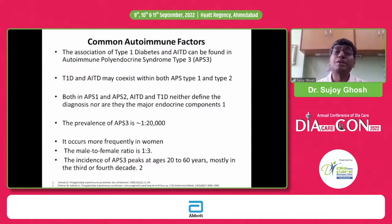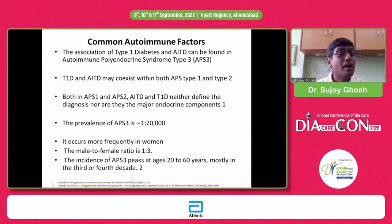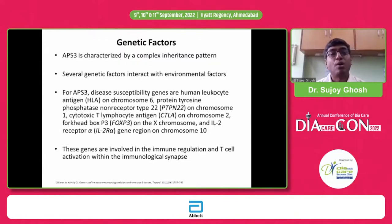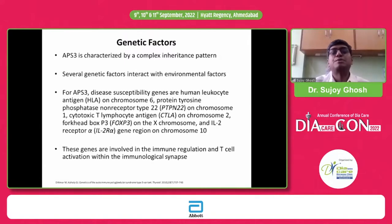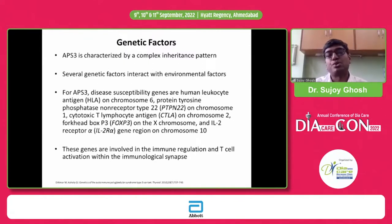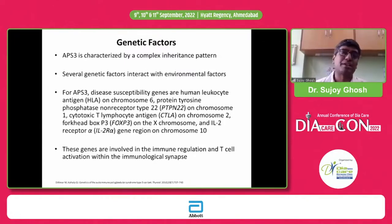Particularly in type 1, which is an autoimmune disorder, you will have other autoimmune diseases associated, including thyroid dysfunction and autoimmune polyglandular endocrine syndromes, particularly type 3. In terms of genetic factors, it has often been shown that there is co-inheritance of certain genes and HLA factors. Those genes which make you susceptible to type 1 also make you susceptible to autoimmune thyroid disease — they seem to be transmitted together through a complex co-inheritance of HLA susceptibility loci.